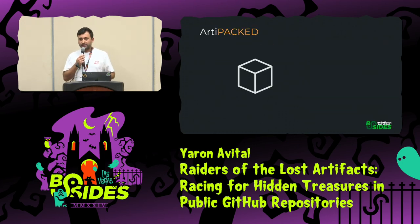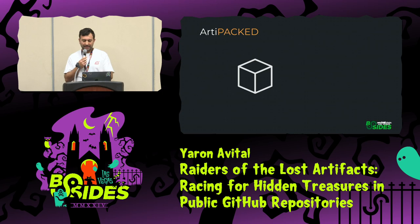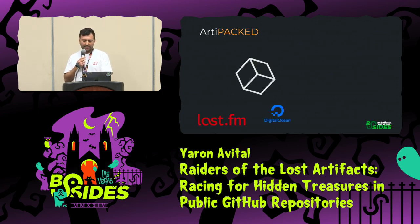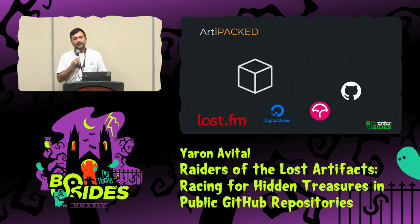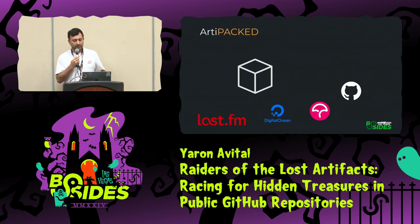And it worked. I even have a name for it — I called it 'Artipact,' which is artifact packed with secrets. I found various secrets for various cloud providers like Last.fm, DigitalOcean, Kotkov, and GitHub. I also found some personal access tokens, which users use to manage their repository, push code, et cetera.